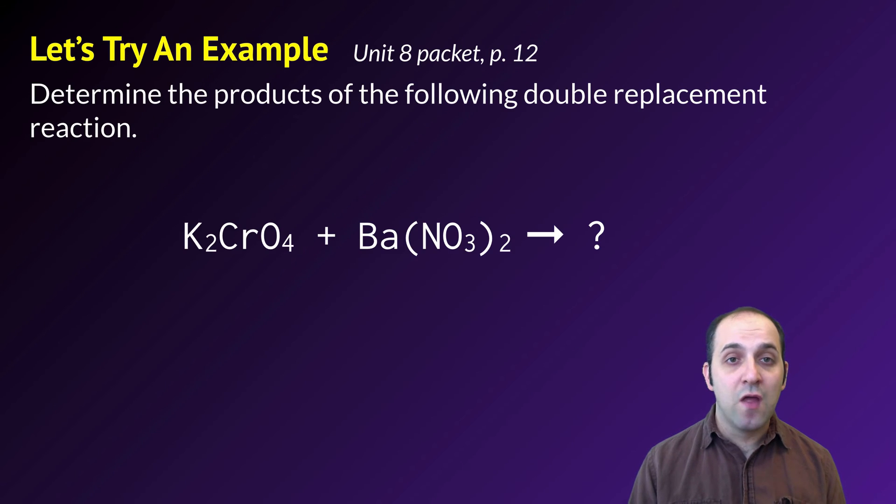Let's go and try an example. This is on page 12 in our unit 8 packet. Determine the products of the following double replacement reaction. So we've got potassium chromate and barium nitrate in this reaction. Pause the video and try it on your own, and then when you're ready, we'll go through it together.